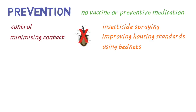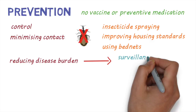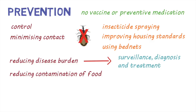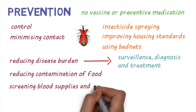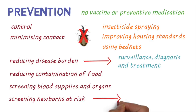Other measures include reducing the burden of the disease by good surveillance, diagnosis and treatment, reducing contamination of food through activities such as properly preparing and cooking food and keeping food covered, screening blood supplies and organs to make sure that they don't carry the parasite, and screening newborns and other children of mothers who are infected to ensure that the disease is diagnosed early and treated.